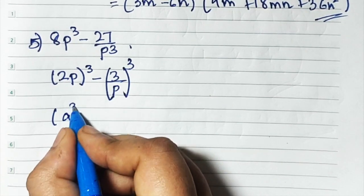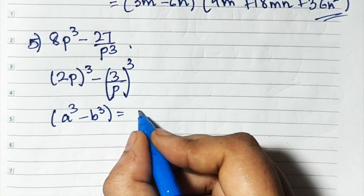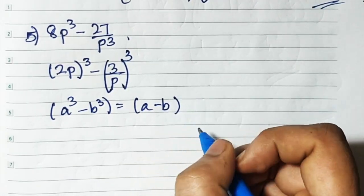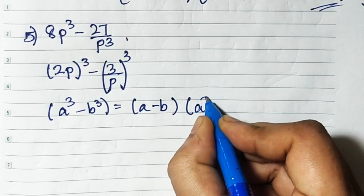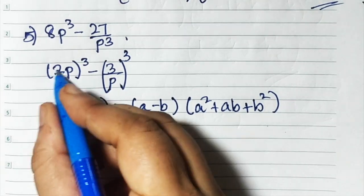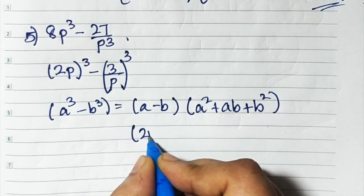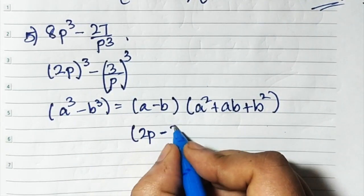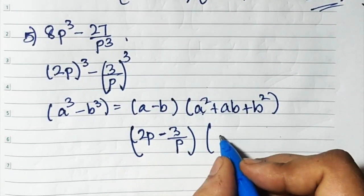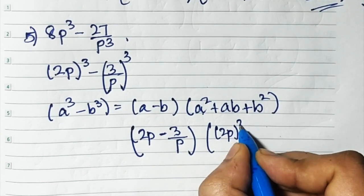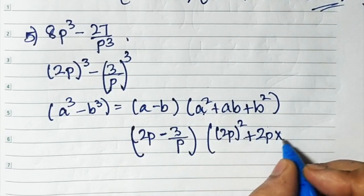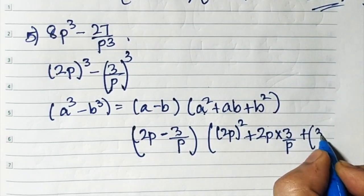The formula is a cube minus b cube equals a minus b times a square plus ab plus b square. Our a is 2p and our b is 3 upon p. So we get 2p minus 3 upon p, times (2p) square plus 2p into 3 upon p plus (3 upon p) whole square.